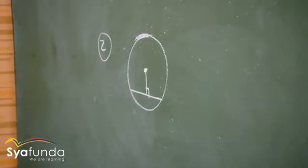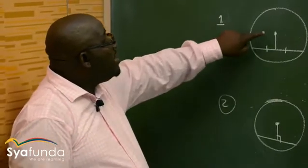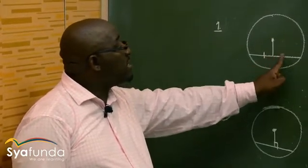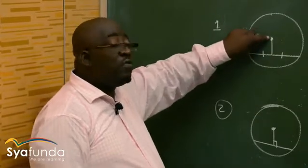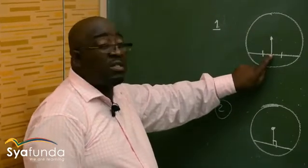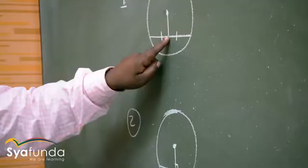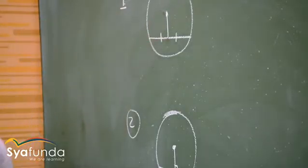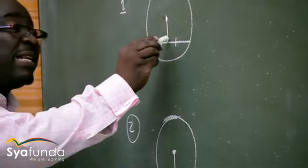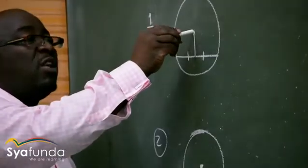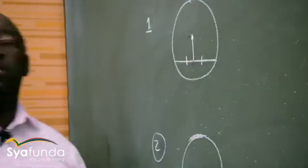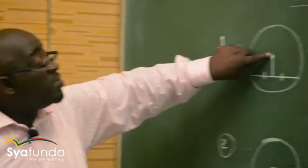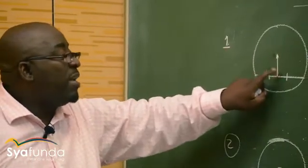Let's look at these two theorems. In the first one, we've got a line drawn from the center of a circle to the midpoint of a chord. A line drawn from the center of a circle to the midpoint of a chord is perpendicular to that chord. So you prove that this angle is 90 degrees.